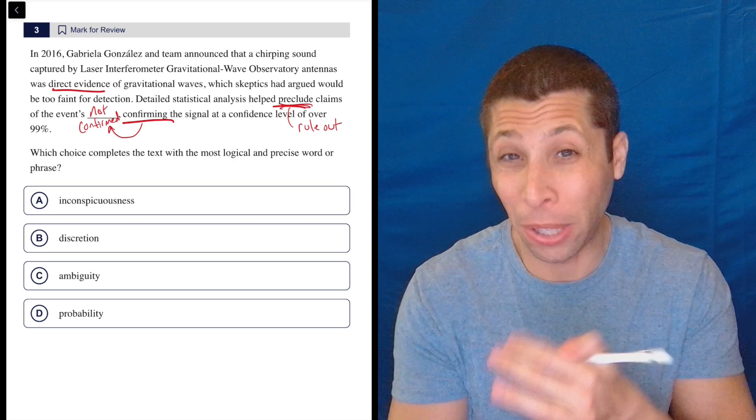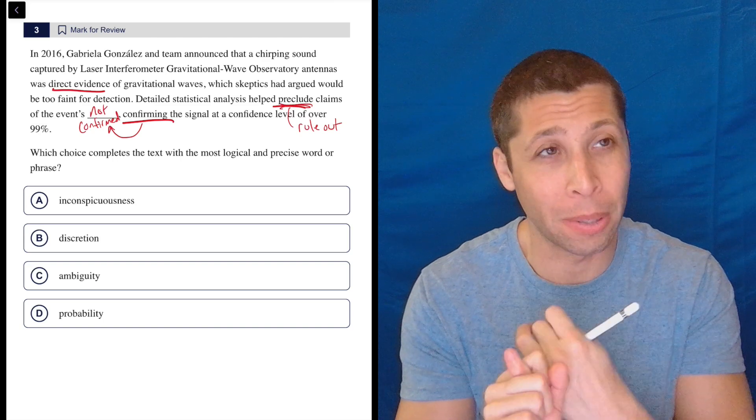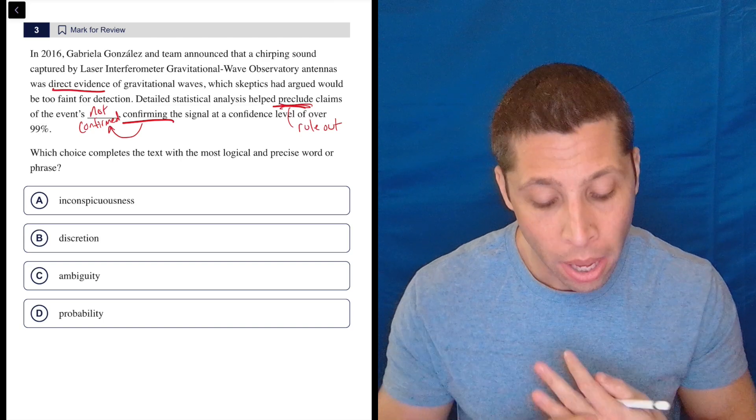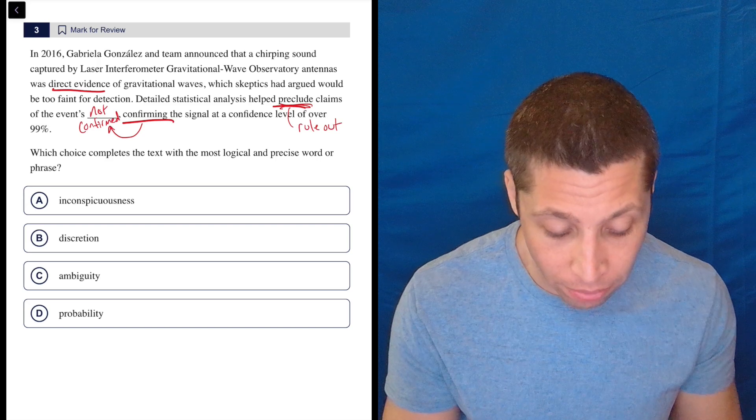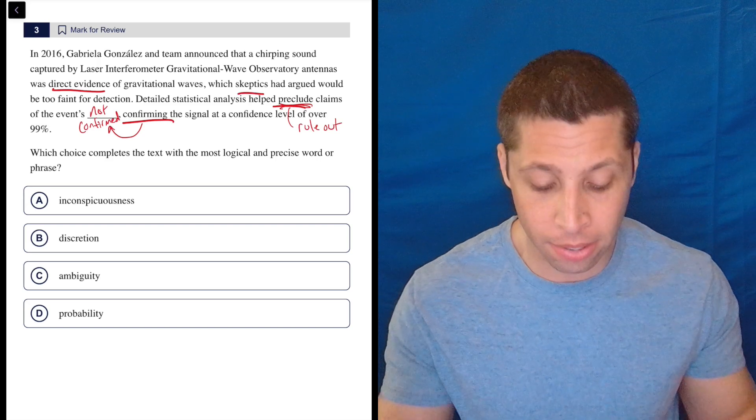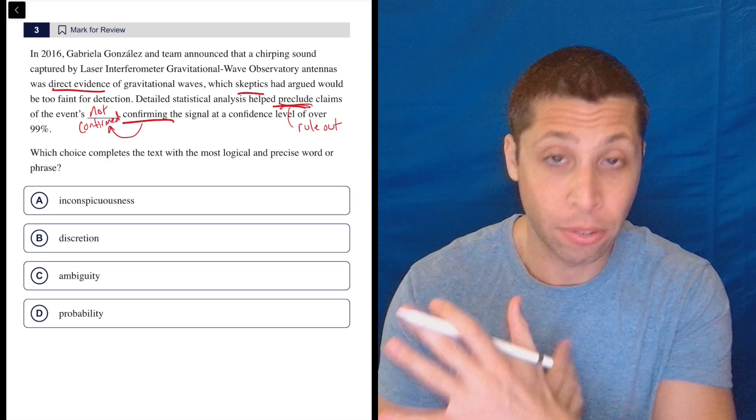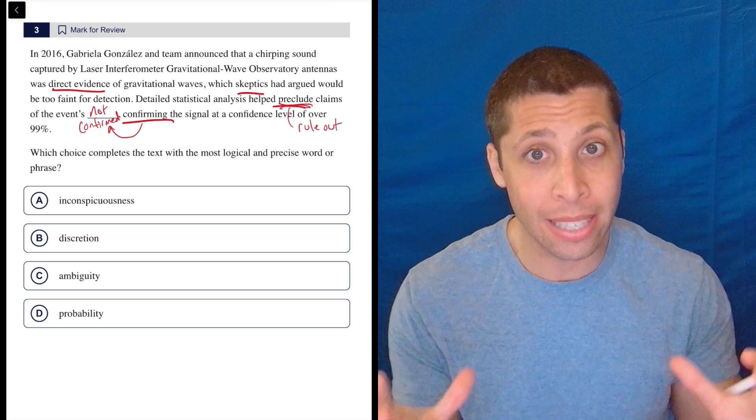Maybe we can get that through other clues. We do have the idea of skeptics. We should know what a skeptic is - someone who doubts things. We have direct evidence. So there's a lot of these other ideas that maybe help us here.